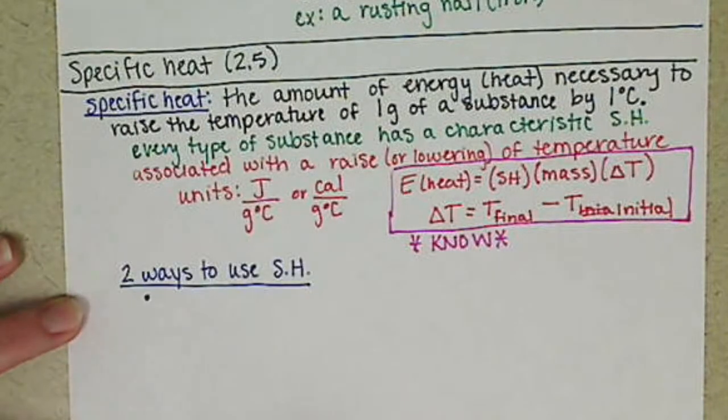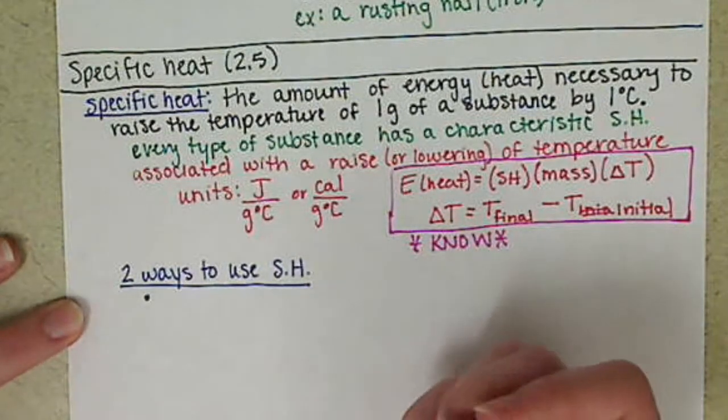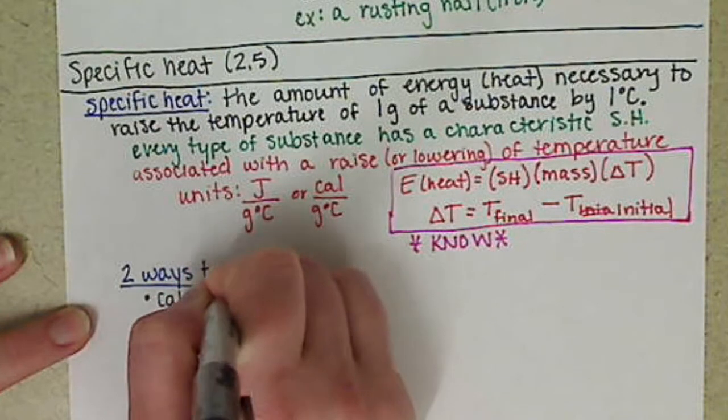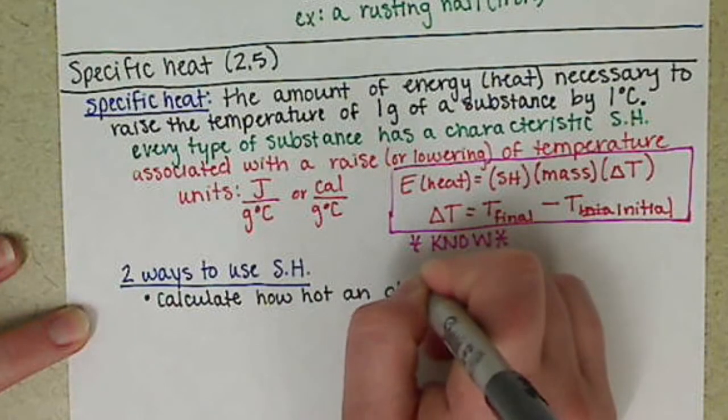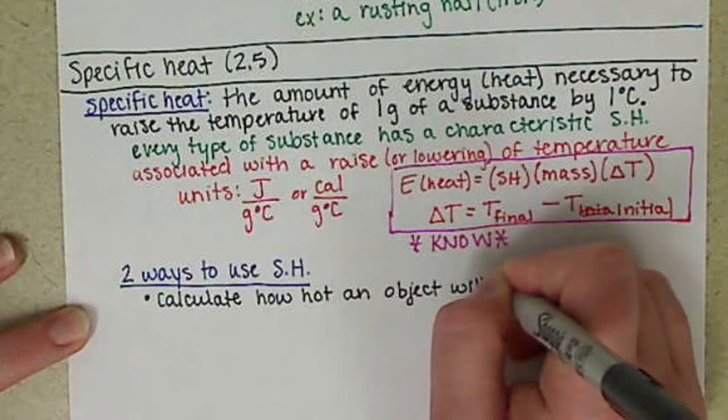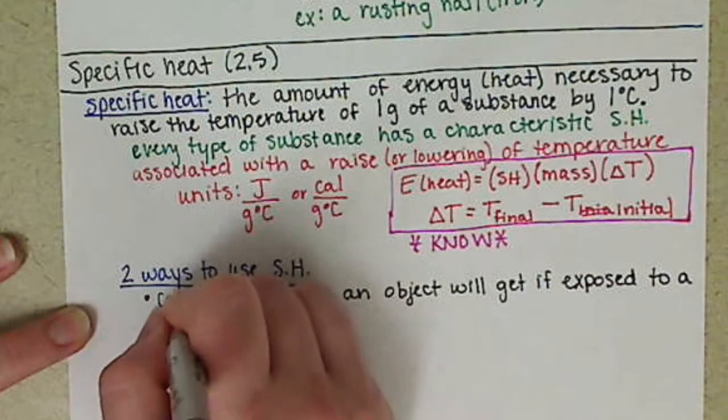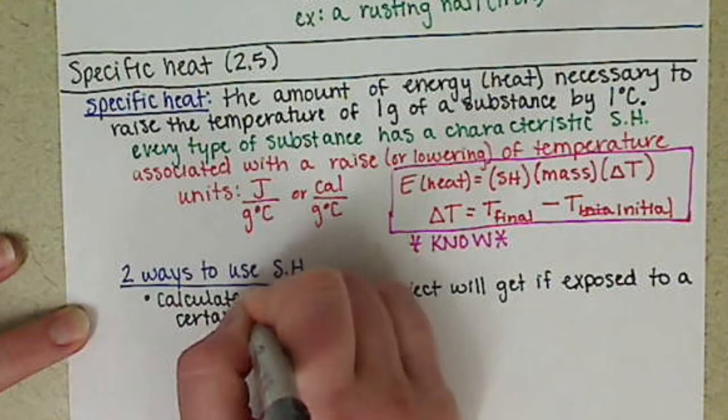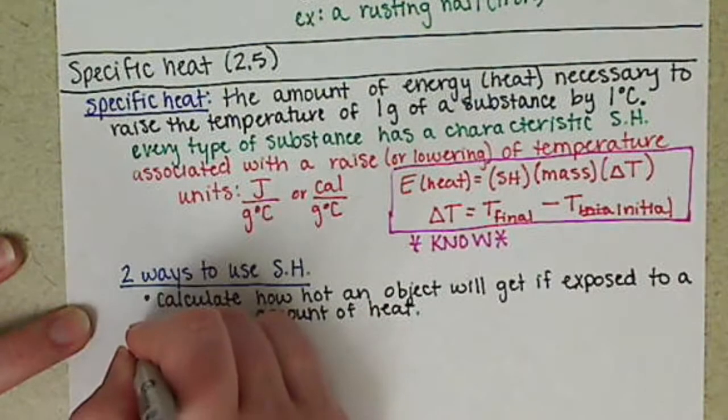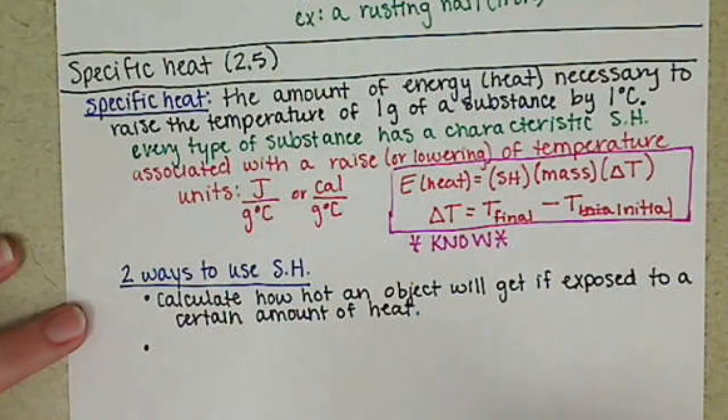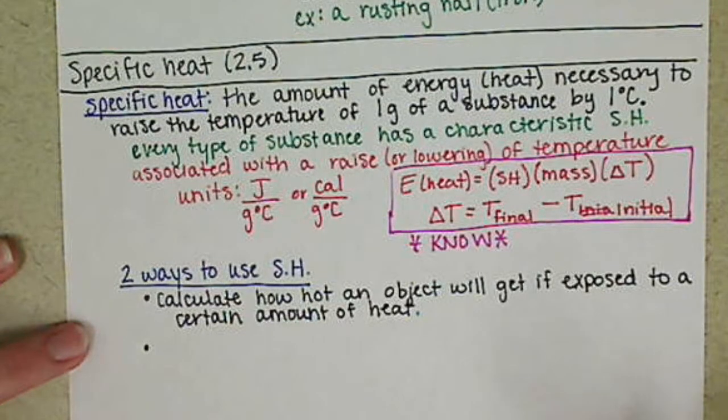The first one is to be able to calculate how hot an object will get if we expose it to a certain amount of energy. The second question is that we can calculate how much heat is necessary to raise the temperature by a certain amount.